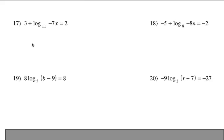Alright, these are the four problems I'm going to have you try, but let's go ahead and focus in on number 17 and I'll work through this one with you. Now, the key here is to analyze what we've got. It says 3 plus log base 11 of that expression, negative 7x, equals 2. What I'd like you to consider is focusing on that log expression almost as if it's a variable. Think of it as 3 plus some variable equals 2.